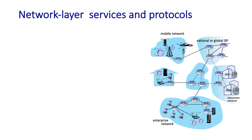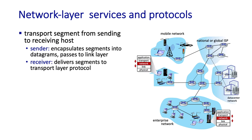Since we're jumping into the network layer having finished the transport layer, let's start at the edge of the network. At the sending host, the network layer will take a transport layer segment from UDP or TCP and encapsulate the segment into an IP datagram.